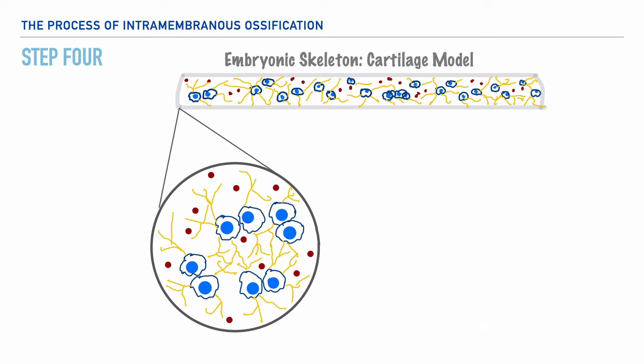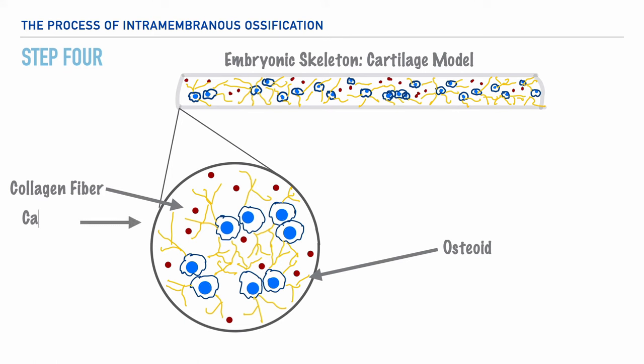These osteoblasts then secrete an unmineralized material called osteoid. Although not pictured, once this osteoid is secreted, it allows for the deposit of collagen fibers into the osteoid. Following this, we'll soon have the deposit of minerals such as calcium and phosphorus, which allow the tissue to begin hardening over the course of a few days.